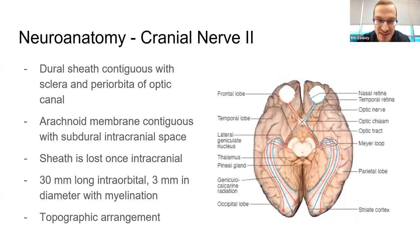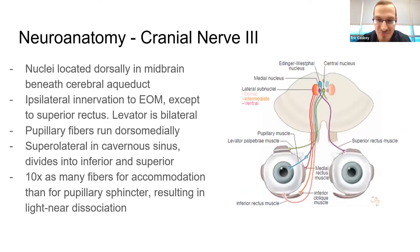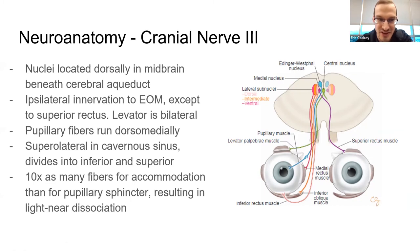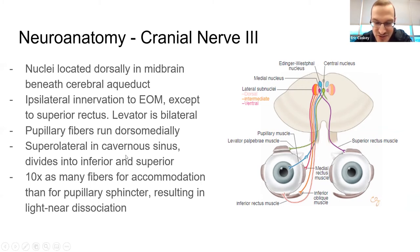Cranial nerve 3 has many nuclei. Everything is ipsilateral except the superior rectus, so think about that in nuclear CN3 lesions. The levator is bilateral. There's a proportion that goes for accommodation versus the light reflex — you have ten times as many fibers for accommodation, and that's one of the anatomic bases for light-near dissociation.